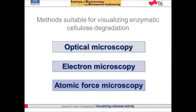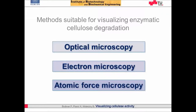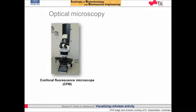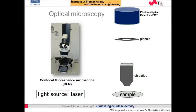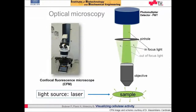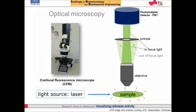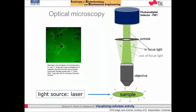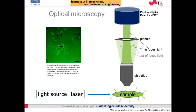The methods used for visualization are optical microscopy, electron microscopy, and atomic force microscopy. Among optical microscopy methods, modern fluorescence microscopy has been successfully used in visualization of labeled cellulases and/or substrate. The CFM principle is outlined schematically here. This is an example from a recent publication showing a typical confocal image of cellulose microfibrils with bound CBH1.